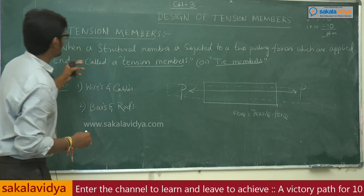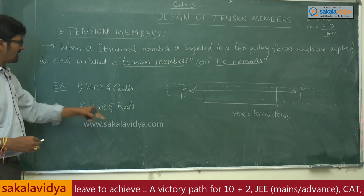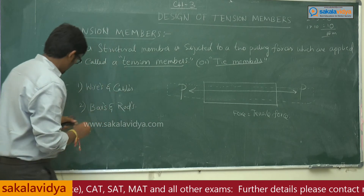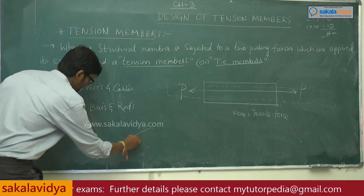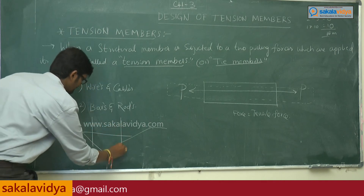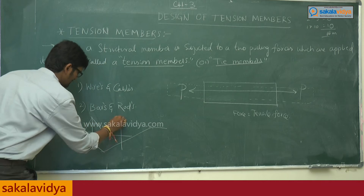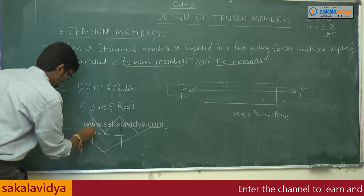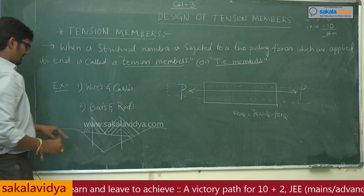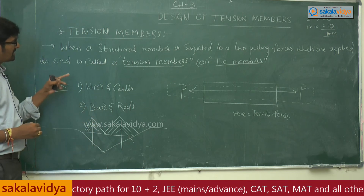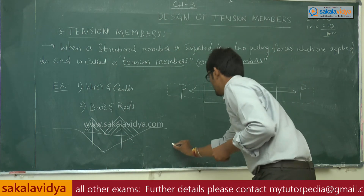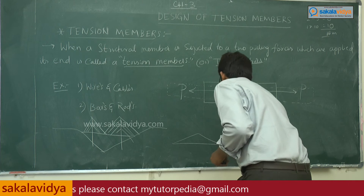Examples of tension members include wires and cables, and bars and rods. Wires and cables are used in suspension bridges — for example, the suspension cable shown here is a bridge. Bars and rods are mostly used as truss elements in lightweight structures and industrial buildings.